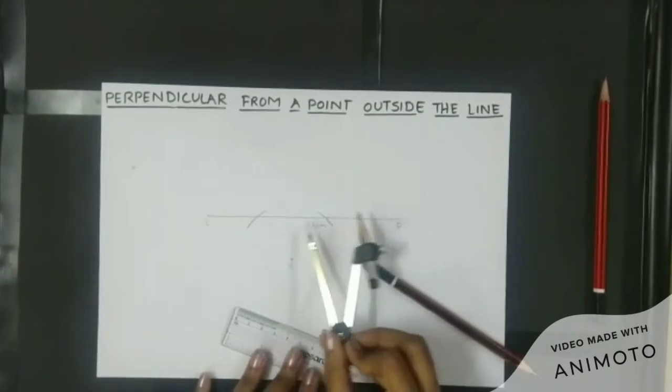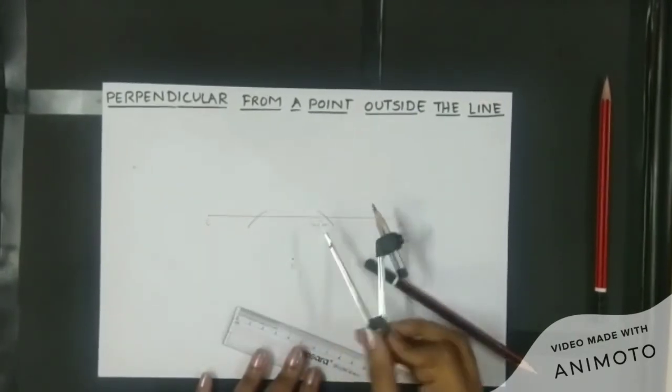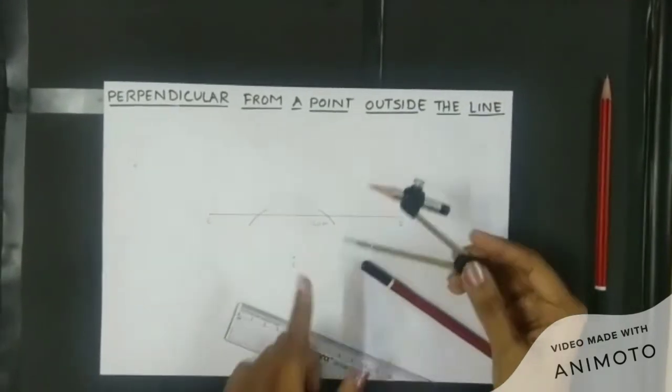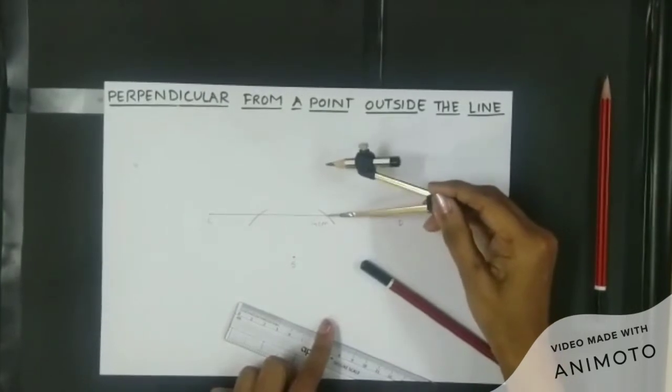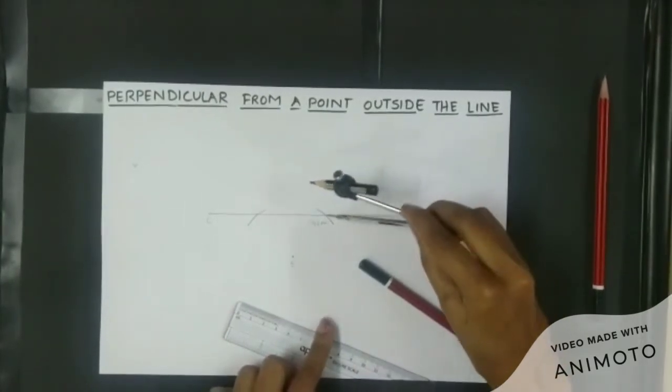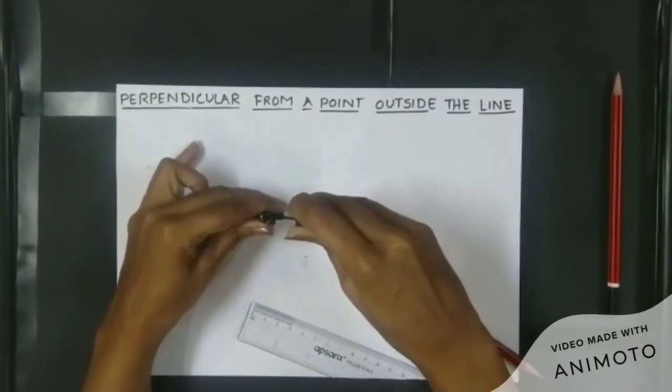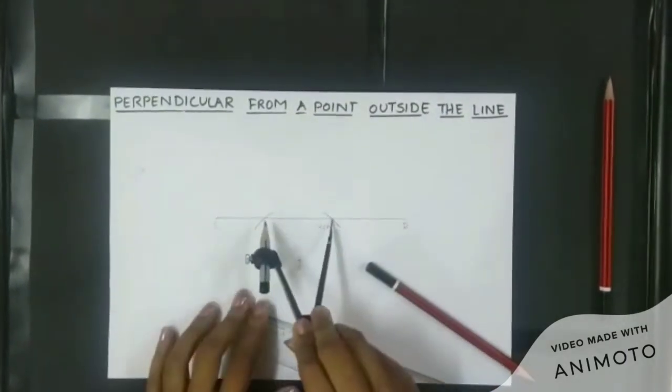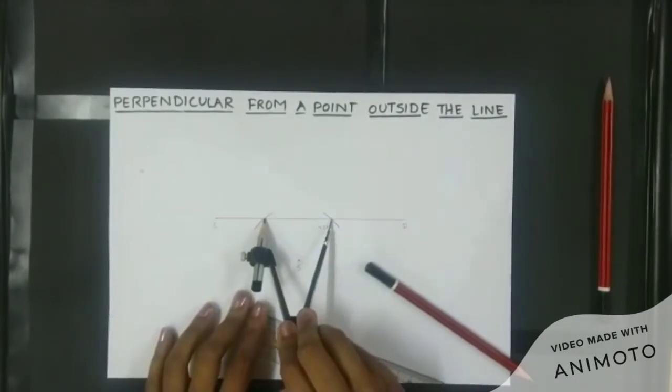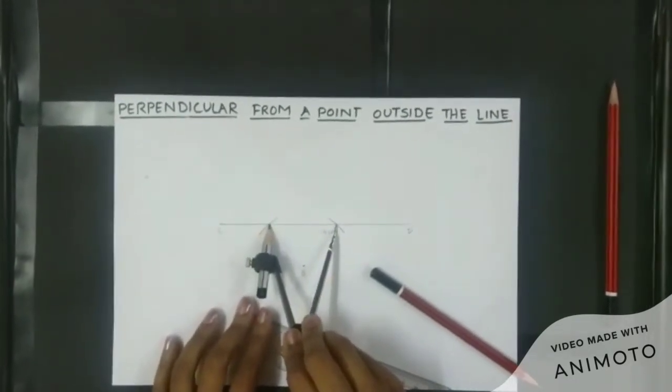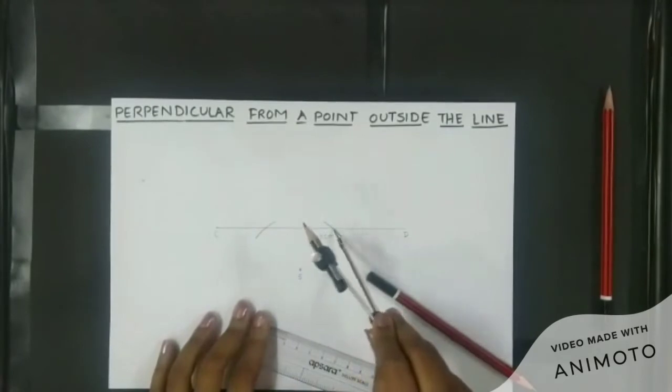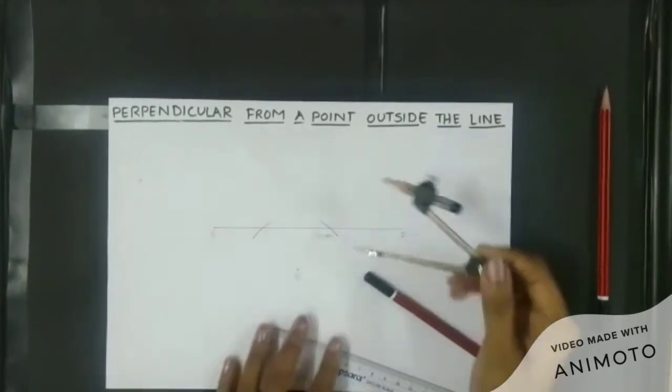I have to keep the pointed side on one point of intersection and take the same distance till the other end of the arc. Now keeping this distance I have to keep the pointed side on one of the endpoints here on the arc.